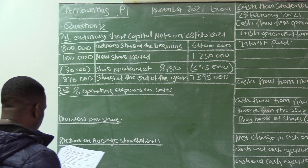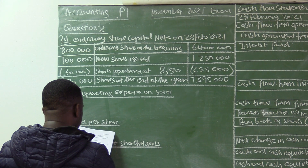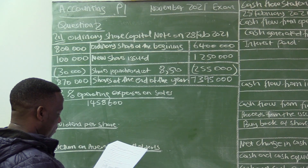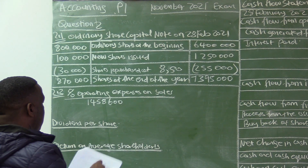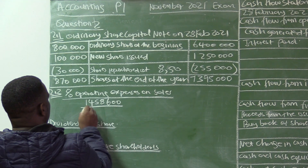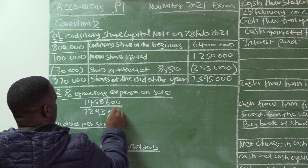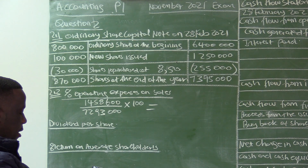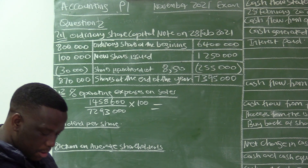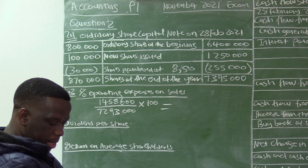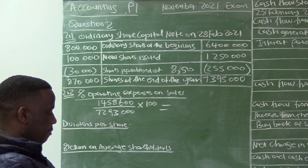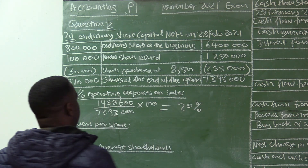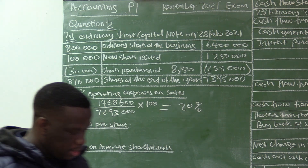Our operating expenses, according to information B, is $1,458,600. That's our operating expenses over sales, which is $7,293,000, multiplied by 100 — that equals 20%. Operating expenses on sales is 20%.